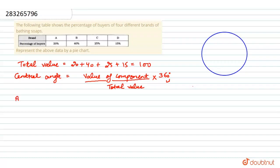First of all, let's find the central angle. We have data A, B, C and D with values 20, 40, 25 and 15.